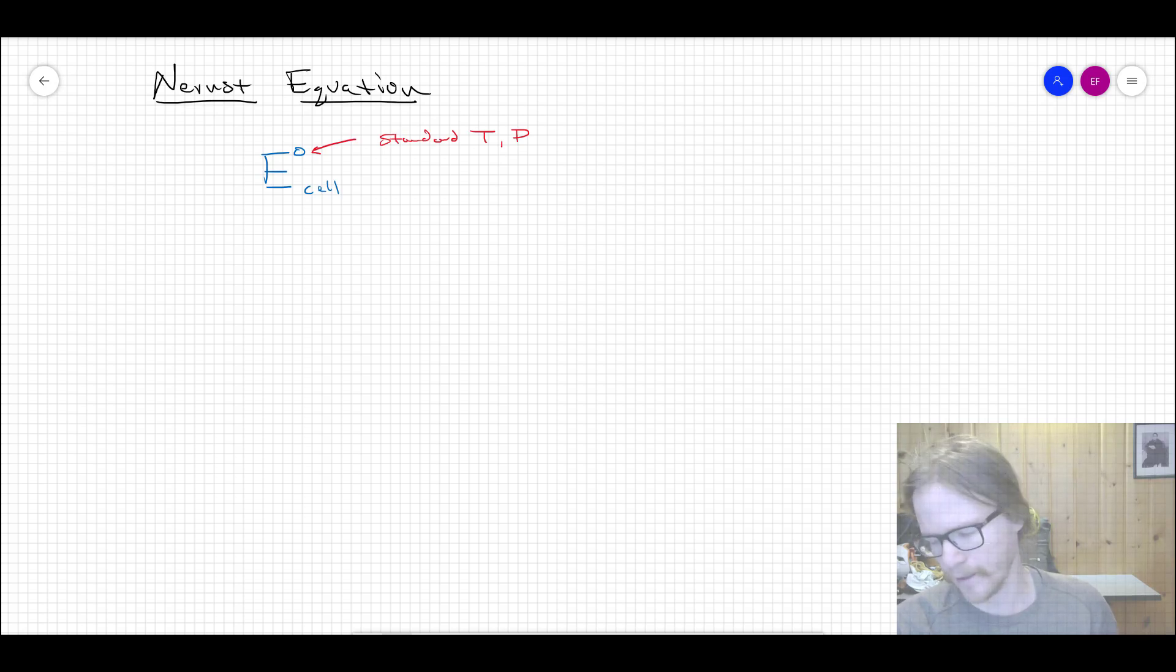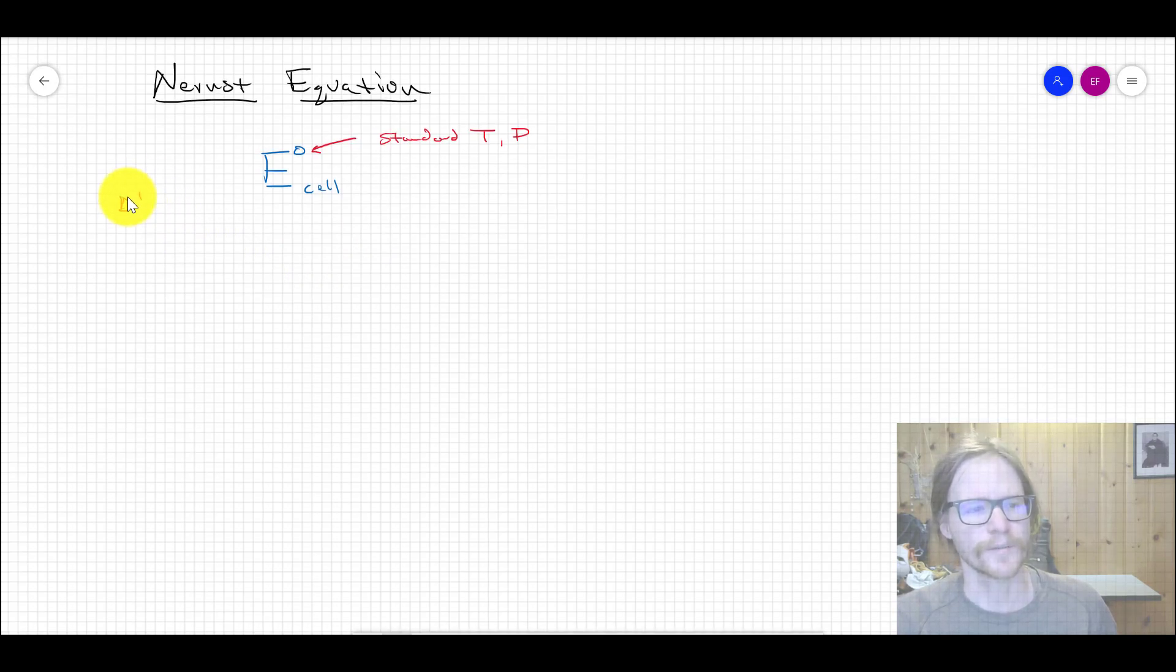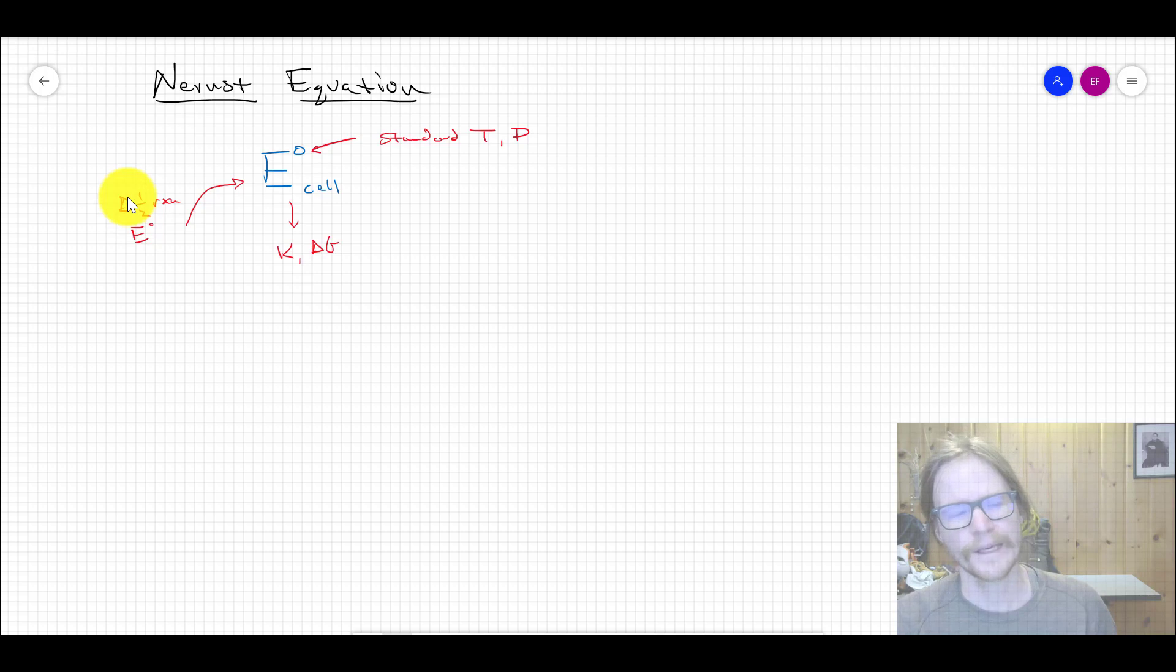So far we've gotten away without having to consider non-standard conditions because everything we've computed is the Ecell or the ΔE between two half reactions under standard temperature and pressure conditions. That's 25°C and one atmosphere of pressure. What we've done thus far is just taken literally the difference between the two half reactions and their E° value, their standard reduction potentials. That gives us our E°cell, and that E°cell can relate to either K or ΔG through equations we're familiar with.